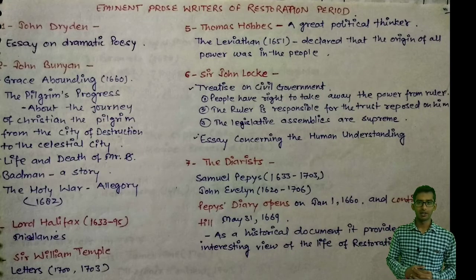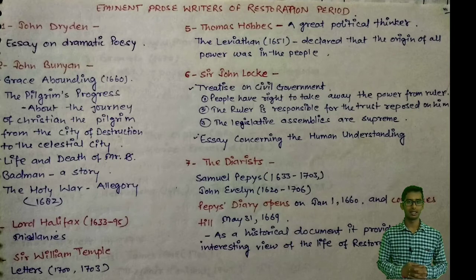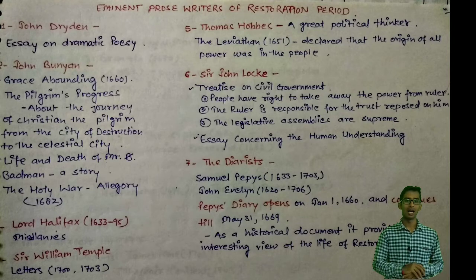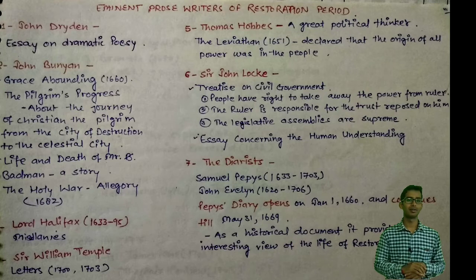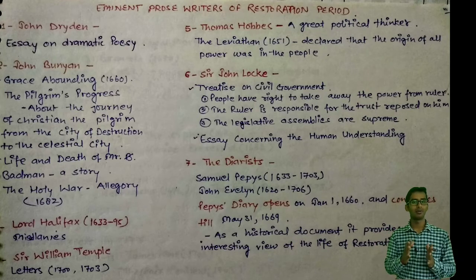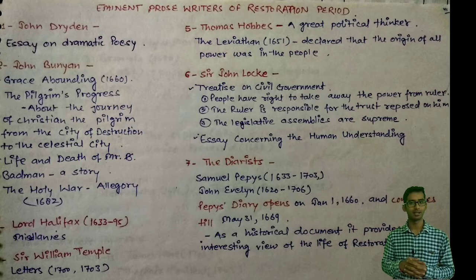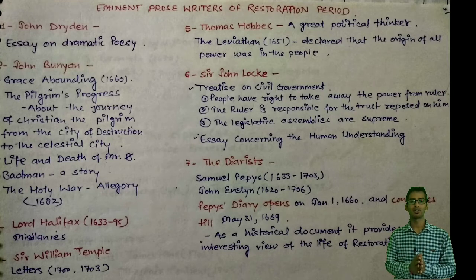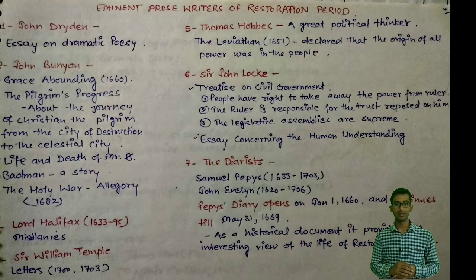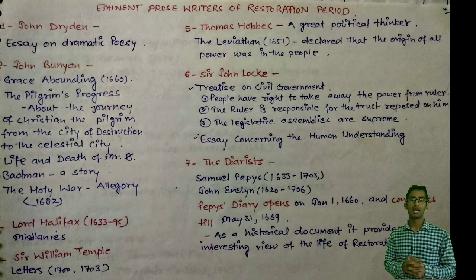Hello everyone, you are most welcome again on my channel. As you know, we are doing a History of English Literature series on this channel. This is Day 23, and in Day 23 we are going to talk again about the Restoration period. In previous two videos we talked about its introduction, social characteristics, and literary characteristics. In the previous video I talked about John Dryden, the eminent prose writer of the age.